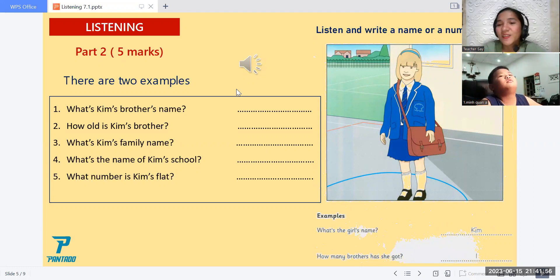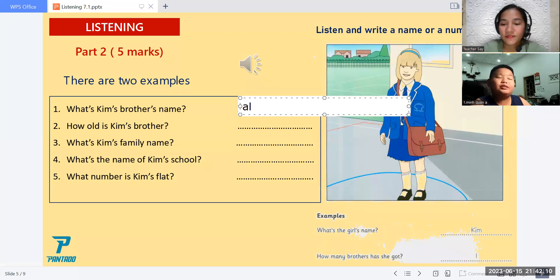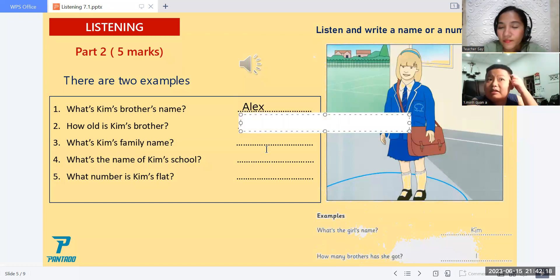Okay, so what is your answer number one? The question number one is, what's Kim's brother's name? And your answer here is? How old is Kim's brother? How old? I don't remember.